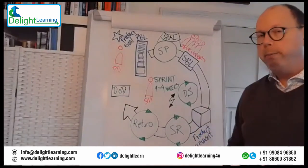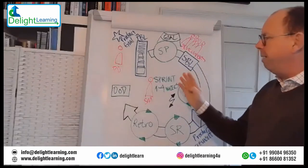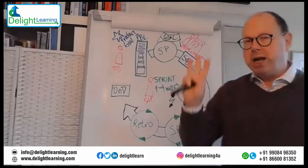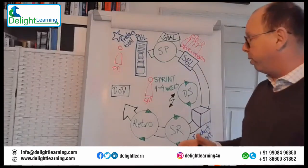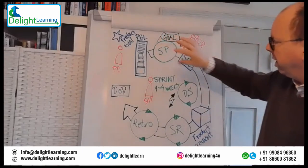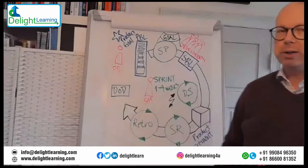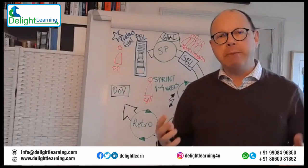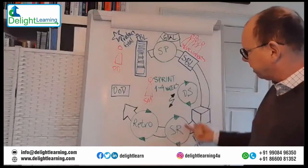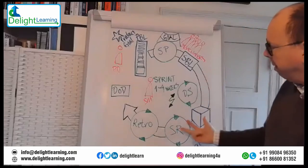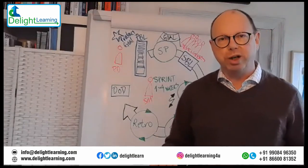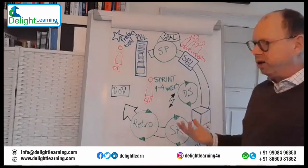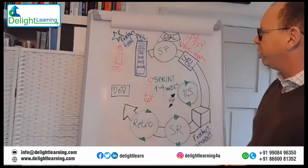Sprint review is maximum four hours for a one-month sprint, and shorter for shorter sprints. Retrospective is maximum three hours for a one-month sprint, and shorter for shorter sprints. The Scrum guide doesn't specify exact durations for shorter sprints — for a two-week sprint, probably less than four hours. You could start by trying half the time, since two weeks is half of four weeks. You decide, but the rule is simply: shorter for shorter sprints.